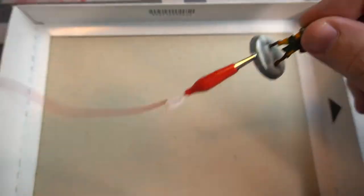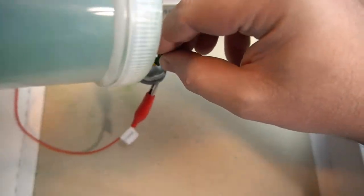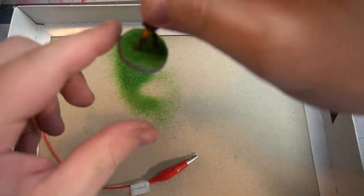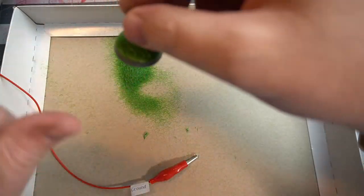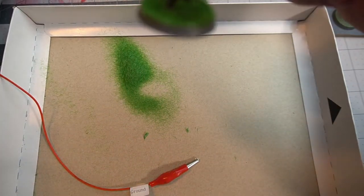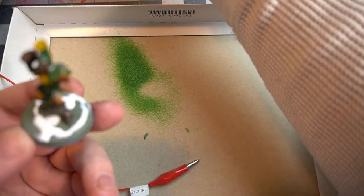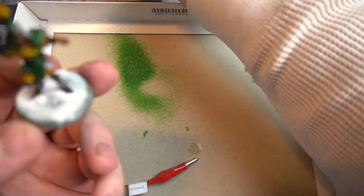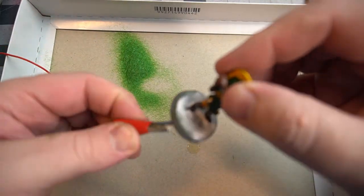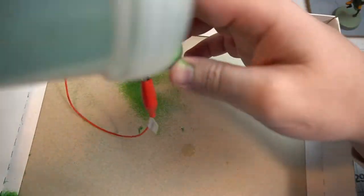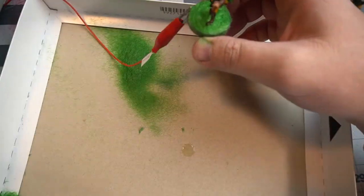Plug the static grass applicator onto the model and then charge it and put it down. It should stand up a little bit. I can't tell how well the static is working on it. Charging it and then sprinkling it on there. And some of the grass will stand up, some of it will lay down and it should look a little bit more like grass.